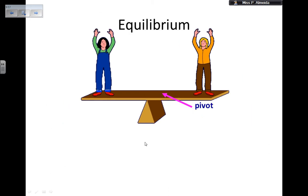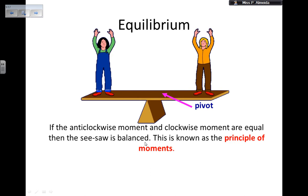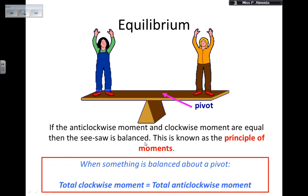Now, if you want to have equilibrium, then you need to have, sorry, I think there's background noise. If you want to have equilibrium, then the clockwise and the anticlockwise moments must be the same. So that means that the principle of moments is going to be obeyed.